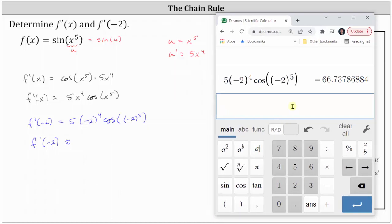Which to four decimal places is 66.7379.